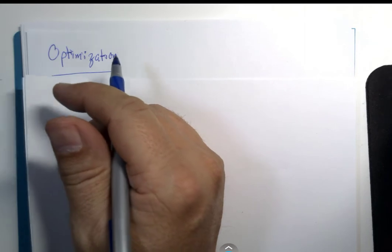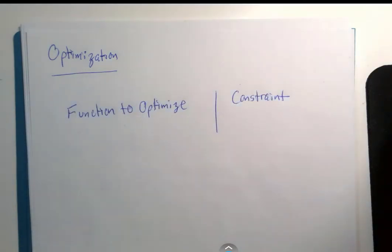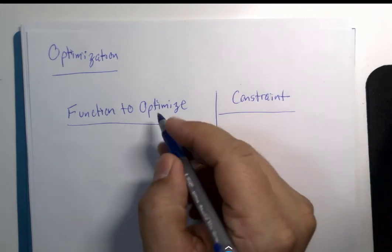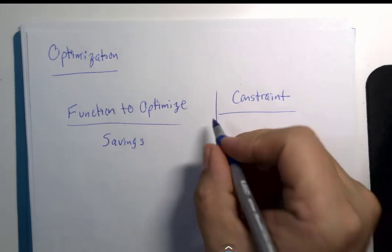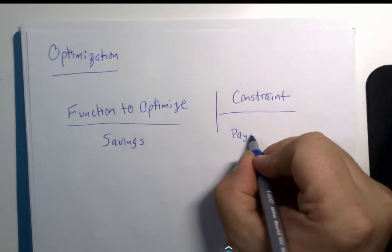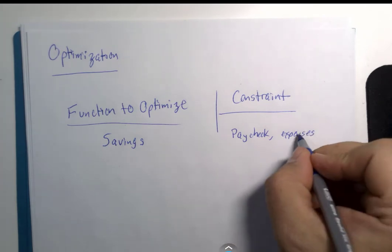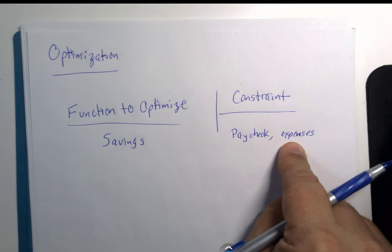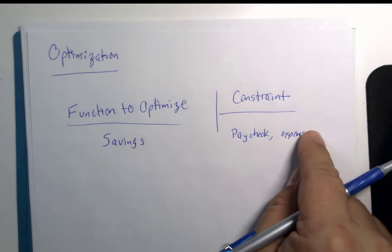This type of optimization deals with problems that have conditions or constraints on them. For example, we're trying to optimize our savings. Our constraint — maybe more than one constraint — is our paycheck and expenses: bills that we have to pay, things we have to put money out for. How do we put the most into our savings given all this information? That's a more involved optimization problem than just finding the high point. There could be more than one answer.